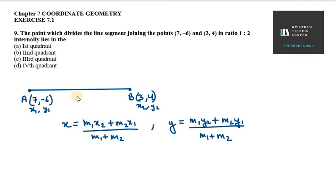We need to determine which quadrant the dividing point lies in. The ratio is 1:2, so m1 is 1 and m2 is 2.